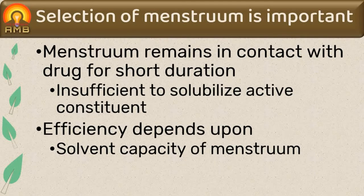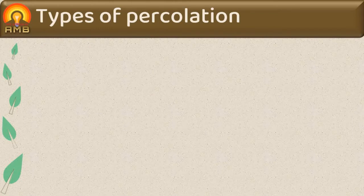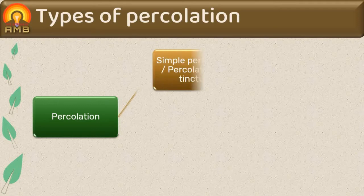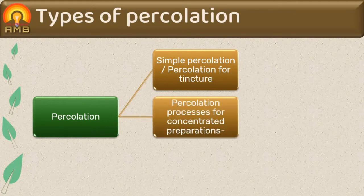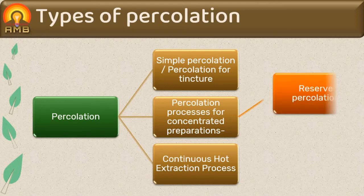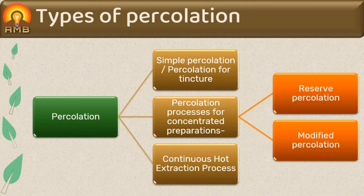Percolation is divided into three types: first is simple percolation, also called percolation for tinctures; second is percolation process for concentrated preparations; and third is continuous hot extraction process. Percolation processes for concentrated preparations are again subdivided into two types — reserve percolation and modified percolation.